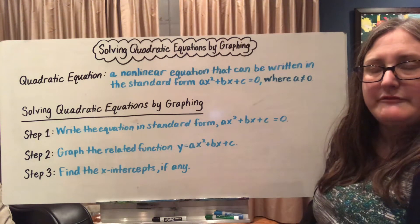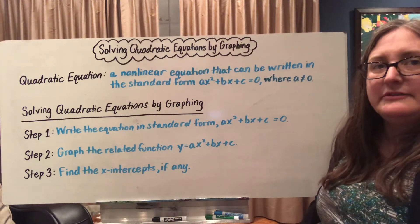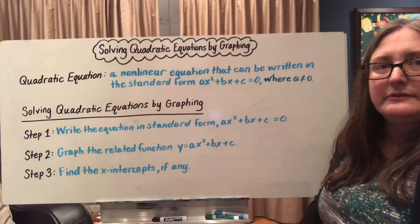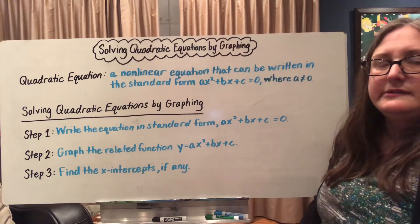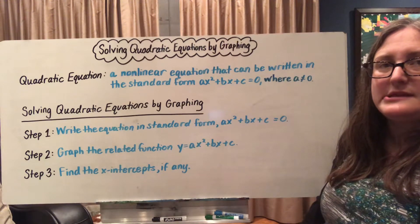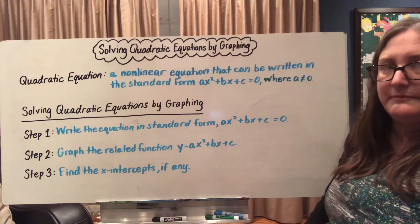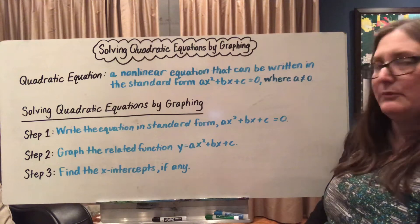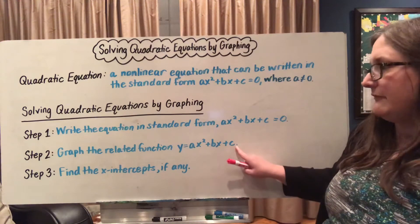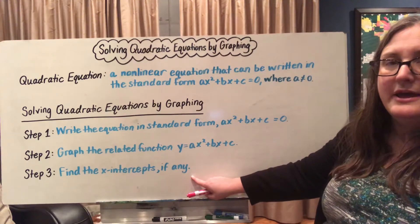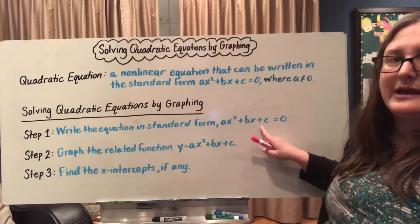This is solving quadratic equations by graphing. A quadratic equation is a non-linear equation that can be written in the standard form of ax² + bx + c = 0, where the constant a cannot be equal to 0. To solve quadratic equations by graphing, we follow three easy steps. First, we write the equation in standard form equal to 0. Then, we graph the related function y = ax² + bx + c. When looking at this graph, we want to find the x-intercepts, if there are any. X-intercepts are the solutions for our quadratic equation when it is set equal to 0.